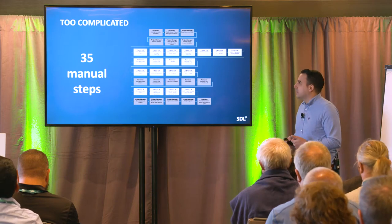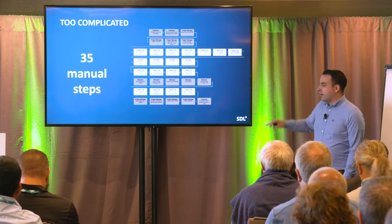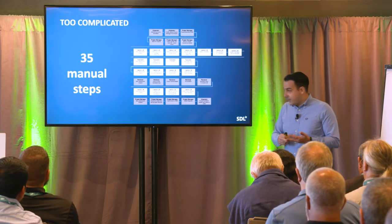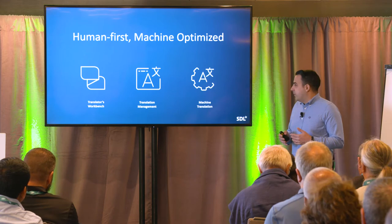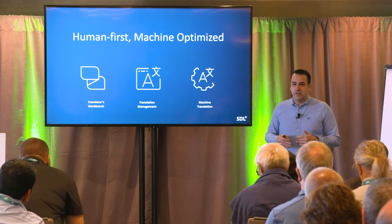If we look at the processes, they are way too complicated. On average there are about 35 manual steps involved in the localization of any one piece of content. You have project managers, vendors, translators, and linguists involved — just way too many manual steps to make this cost-effective, fast, and less error-prone.